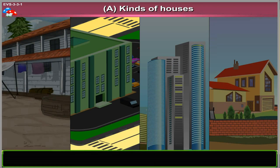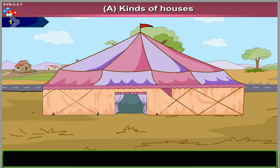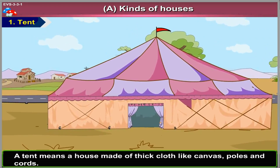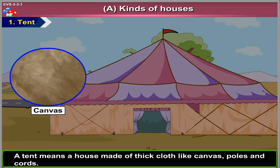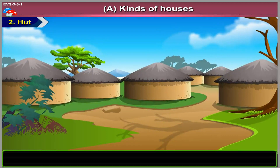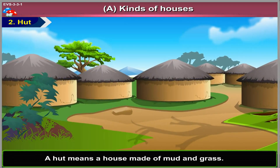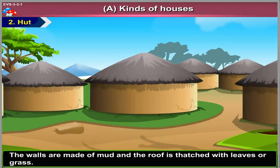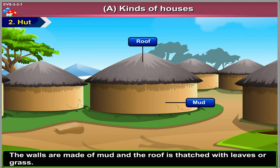Kinds of Houses: We can build different kinds of houses. A tent is a house made of thick cotton-like canvas, poles and cords. A hut is a house made of mud and grass. The walls are made of mud and the roof is thatched with leaves or grass.